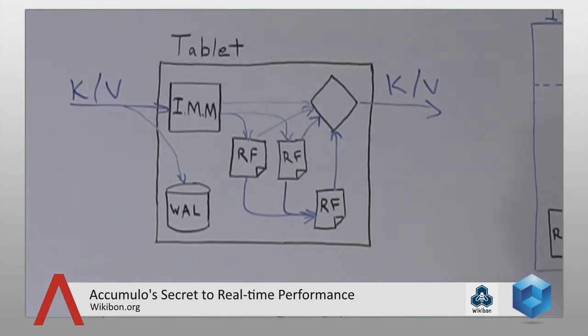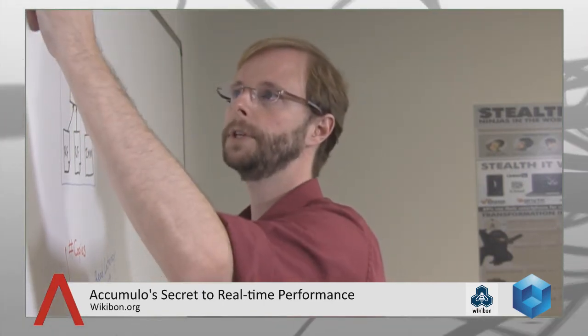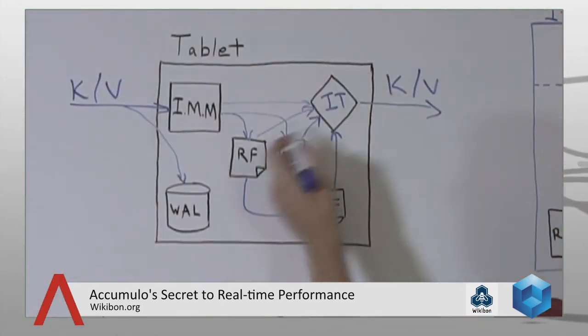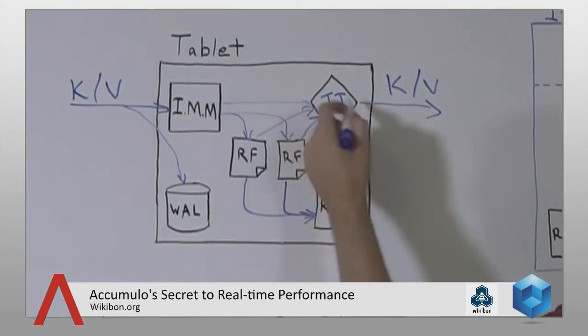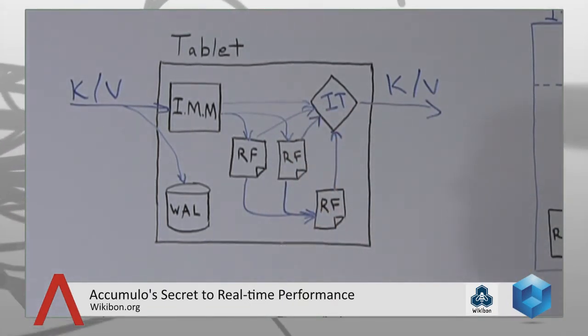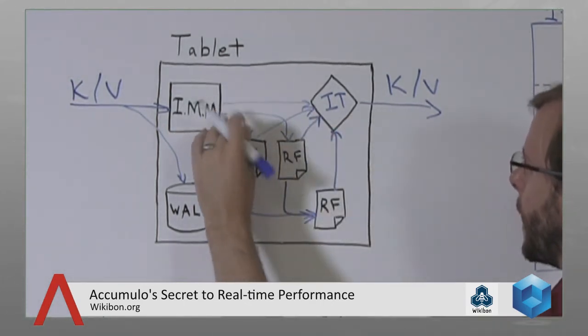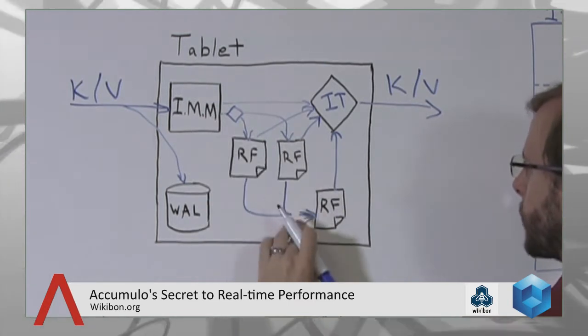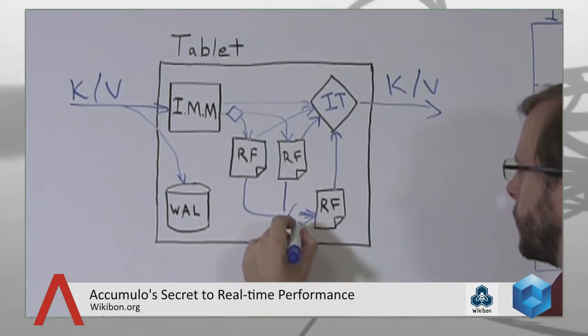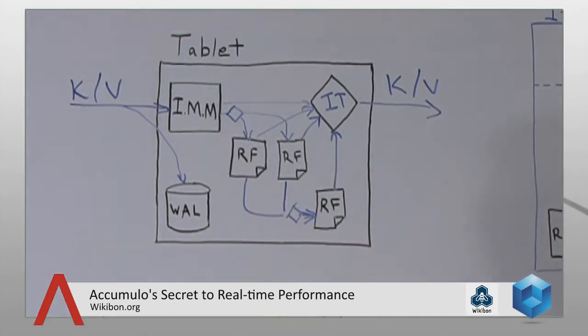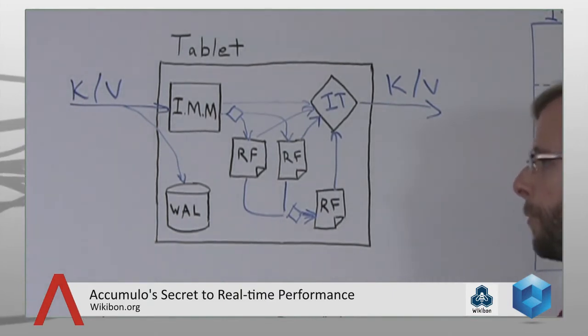All of this is basically a standard log-structured merge tree design, going back to the mid-90s. One of the things we've done with Accumulo is add another mechanism known as the iterator tree. As we stream data from these multiple sources and merge them together, it actually goes through a series of operators. Those operators take place not only on the query path, but also on the compaction paths — so there's a series of operators that these sorted streams of key-value pairs go through.